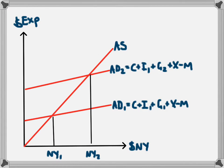This video is going to use the aggregate demand and aggregate supply model to explain the crowding out effect in relation to fiscal policy.